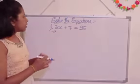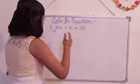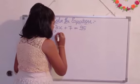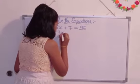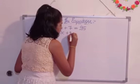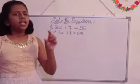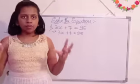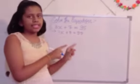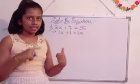So first we are going to write the question as it is. So 3x plus 7 is equal to 95. While solving every equation, the question should be written as it is while answering the question.